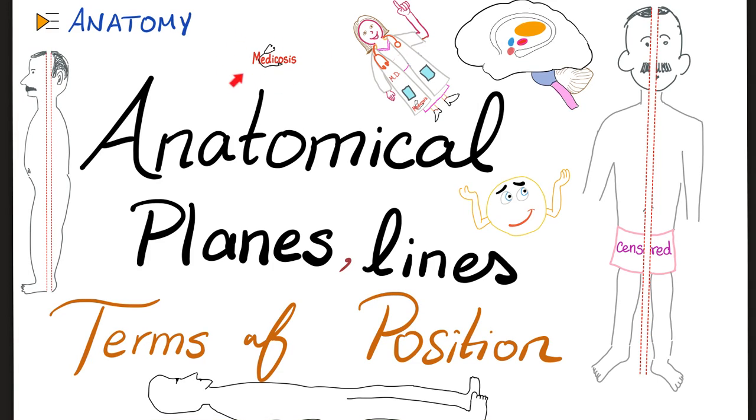What is going on? It's Medicosis Perfectionarius, where medicine makes perfect sense. Let's continue my anatomy playlist. Today we'll talk about anatomical planes, lines, and terms of position. This is a discussion in general anatomy. It's an introductory course. Now let's get started.